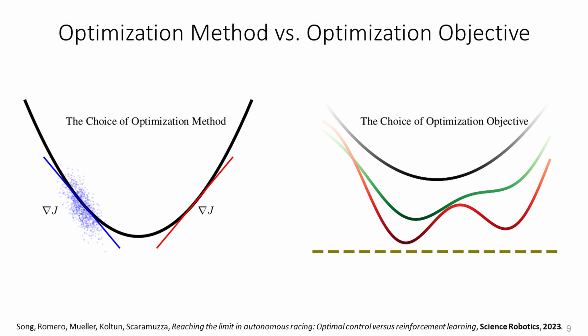Recent research has concluded that the main advantage of RL lies in the fact that it can solve a much more complicated optimization objective.